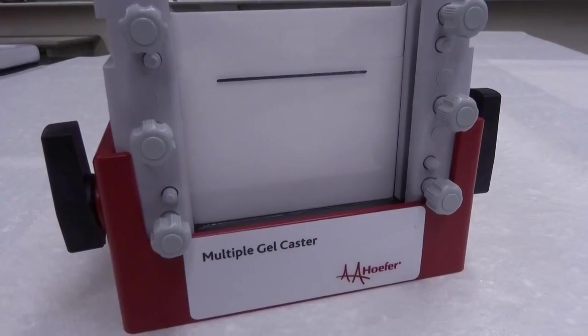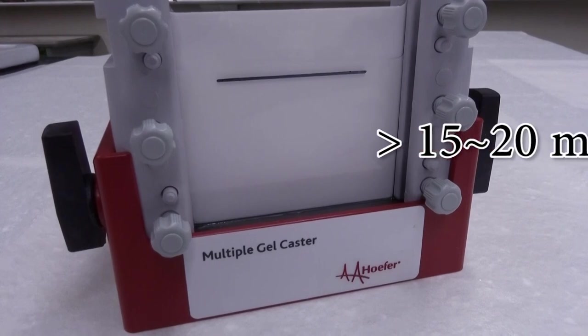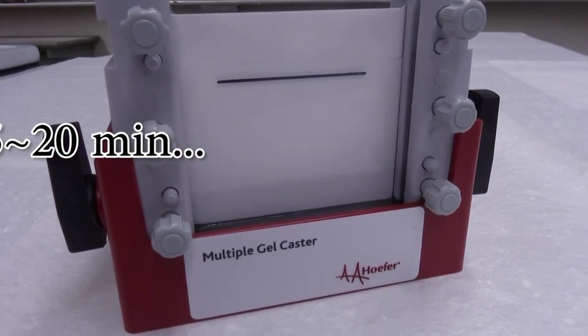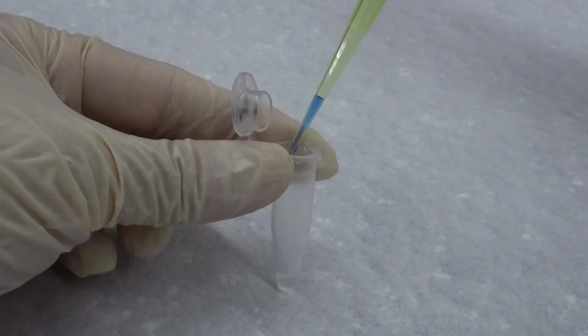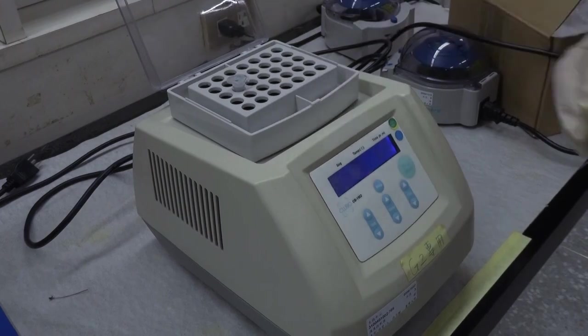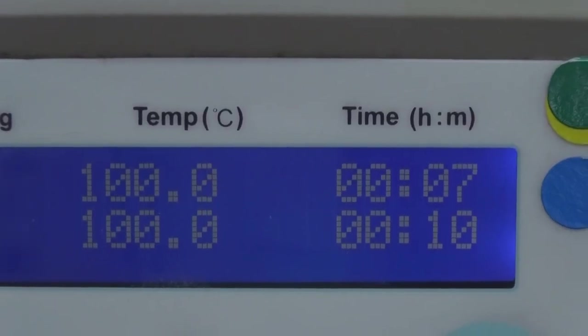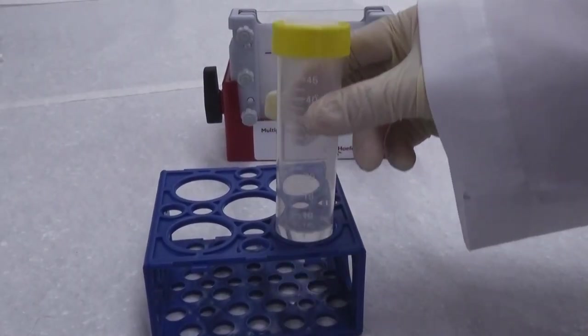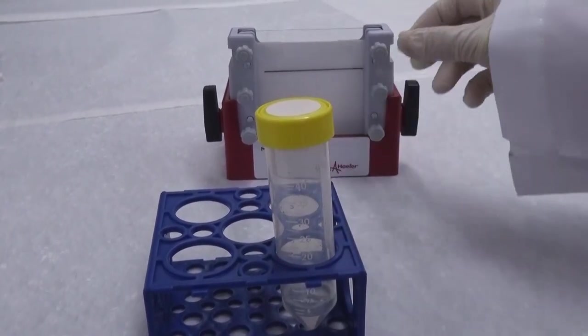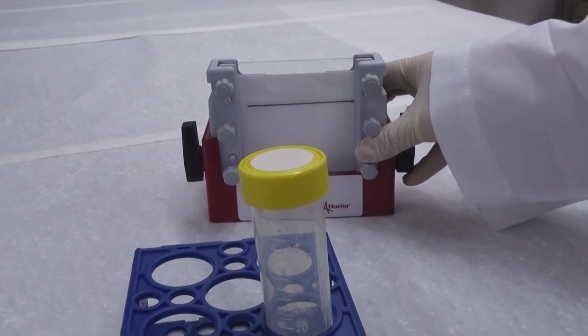Wait at least 15 to 20 minutes for the gel to polymerize. Low gel concentration and temperature require longer time. While waiting for the gel polymerization, one might prepare the samples for electrophoresis. When the time is up, observe the surplus gel solution. If it has polymerized, then the gel in the cassette usually has also polymerized.